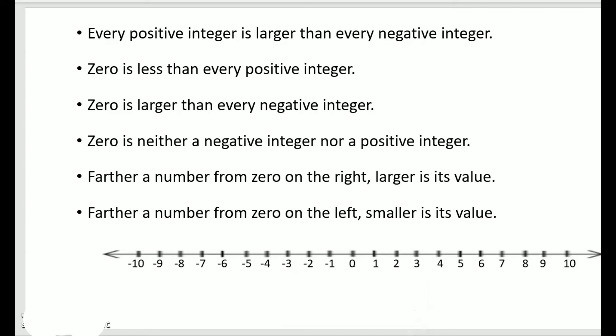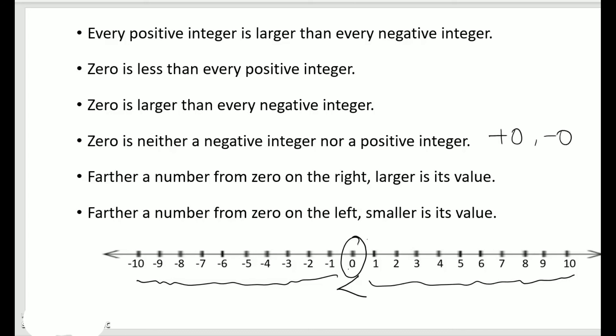Let's summarize what we learned. Every positive integer is greater than every negative integer. Zero is less than every positive integer. Zero is greater than all negative integers. Zero is neither a negative integer nor a positive integer, so we don't write plus 0 or minus 0 — we just write 0.